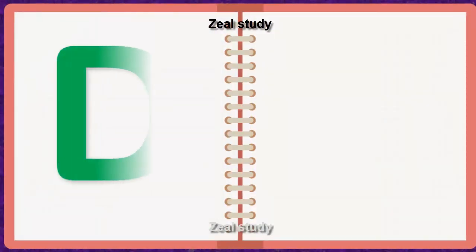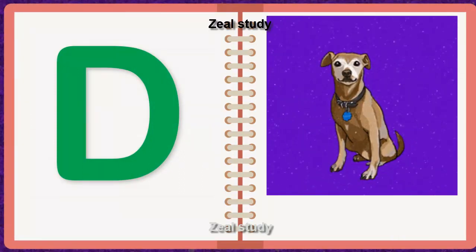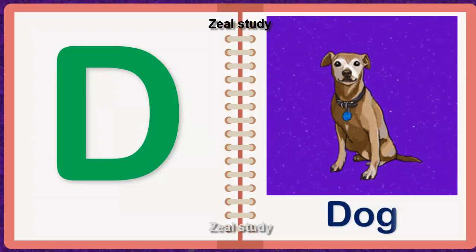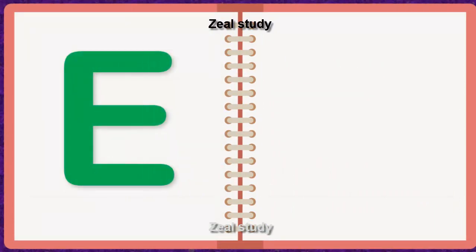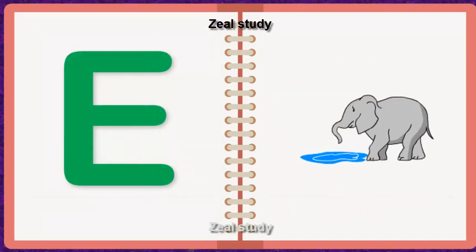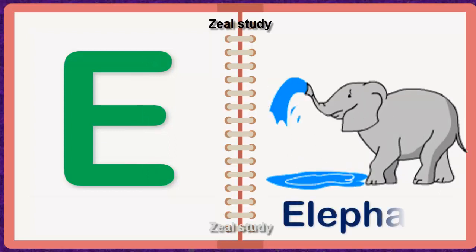D for Dog. D, O, G. Dog. E for Elephant. E, L, E, P, H, A, N, T. Elephant.